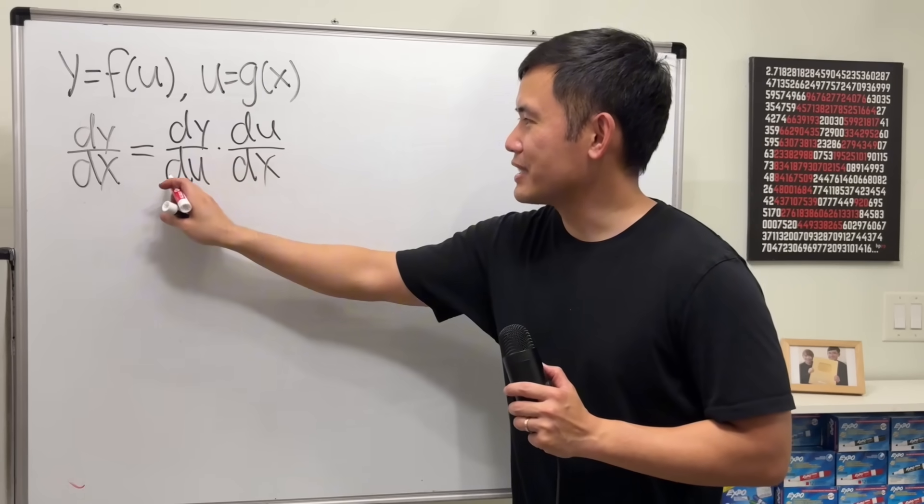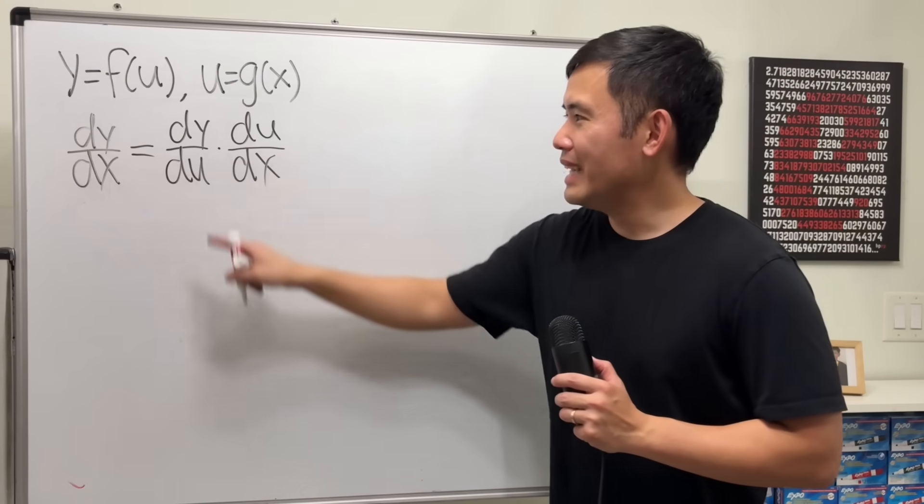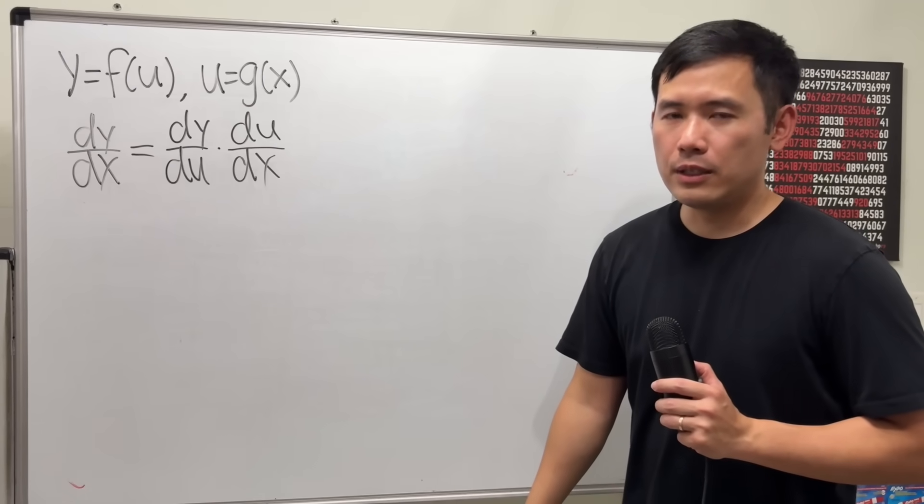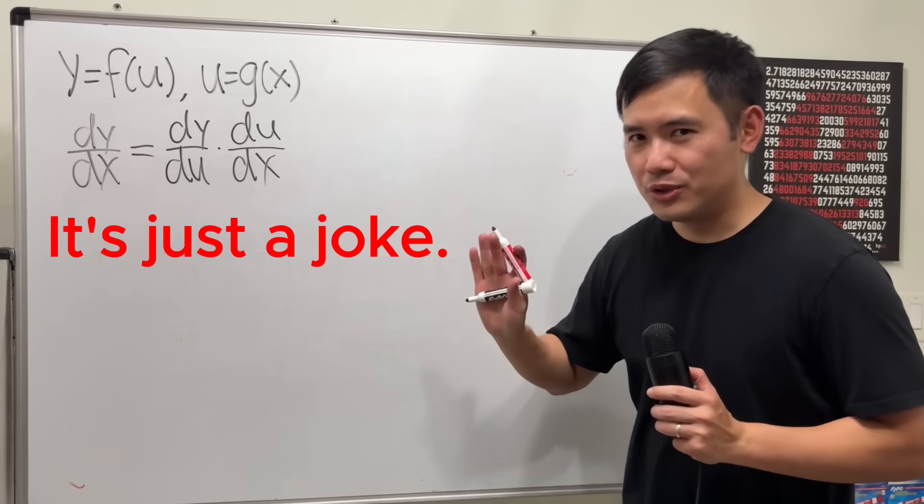Once we have this, it looks like we can just cancel the du and the du, and we get dy dx, which works very nicely, right? I know, it's just a joke.